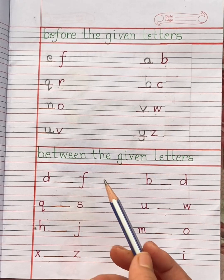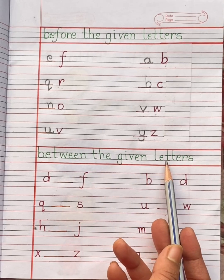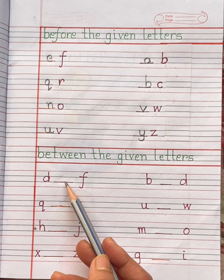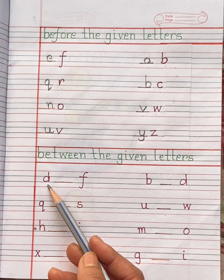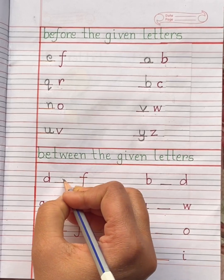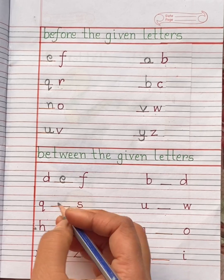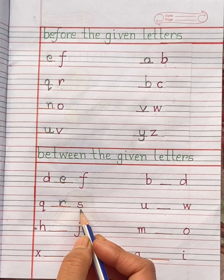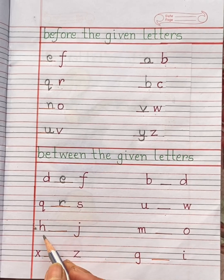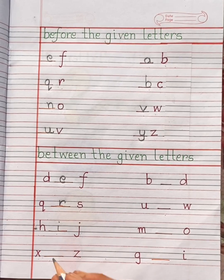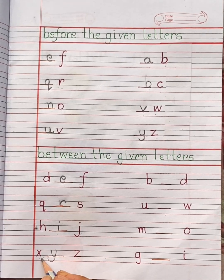Next question is: between the given letters. Here you can see two letters, but in between one letter is missing — so you have to write the missing letter. D _ F: we write E, so D E F. Q _ S: after Q is R, so Q R S. H _ J: we write I, so H I J. X _ Z: we write Y, so X Y Z.